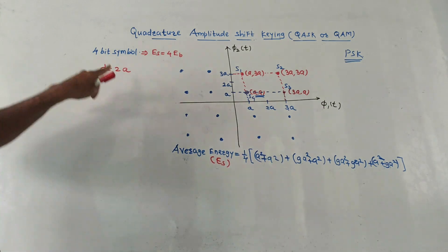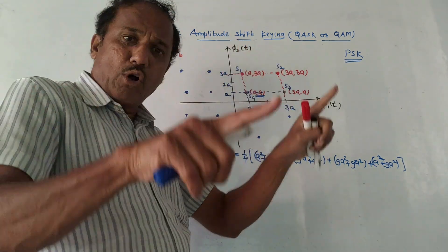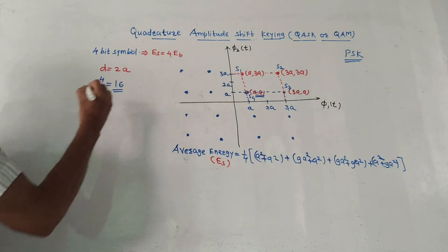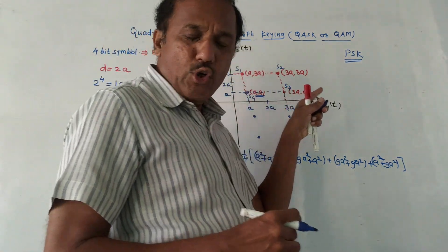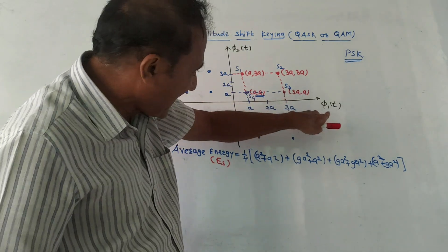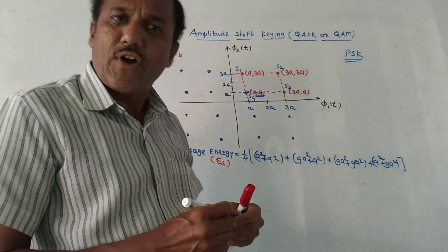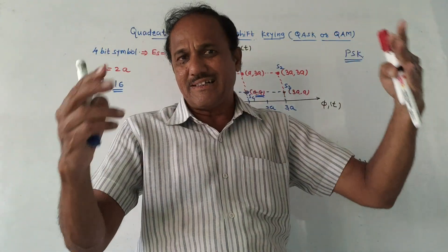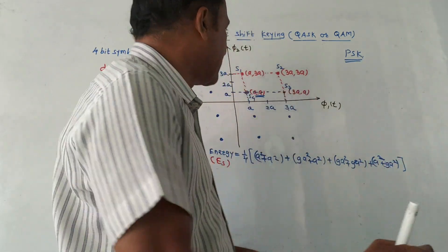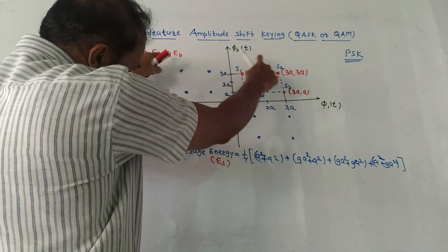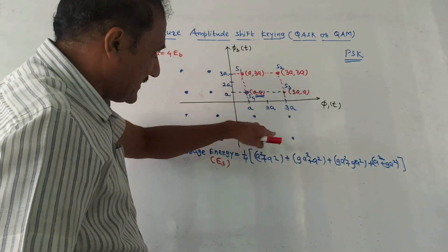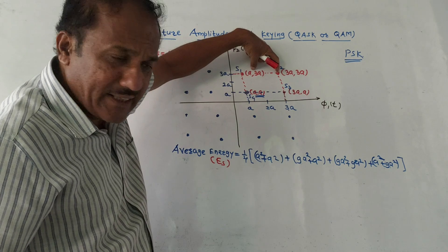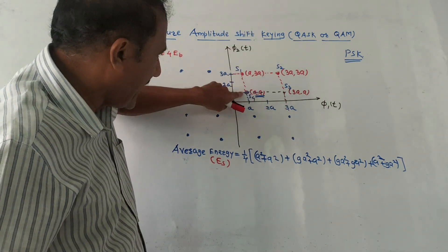We consider that a symbol is made of four bits, so total combinations will be 2 to the power 4, that is 16 combinations. This is the diagram for geometrical representation. On the x-axis I have marked φ1(t), and on the y-axis I have marked φ2(t). These are orthogonal signals. There are 16 points total. In the first quadrant, how many points do we consider? Here s1, s2, s3, and s4.